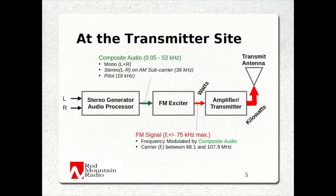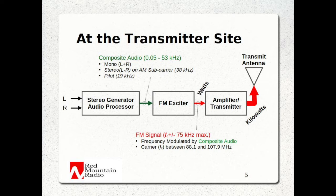At a typical FM transmitter site, the program material runs through a chain of audio signal processing and then to the FM exciter and transmitter. If the program material is stereo, it is turned into a single channel of audio known as composite audio, which includes a mono component — left plus right — and a stereo component — left minus right. The stereo component is then amplitude modulated onto a subcarrier at 38 kHz in the United States, and a 19 kHz pilot tone — half of 38 — is also added to assist with recovery of the stereo subcarrier in the receiver. The receiver then sums and subtracts the left plus right and left minus right signals to recover the individual left and right signals.